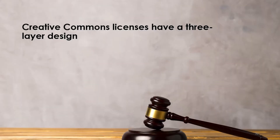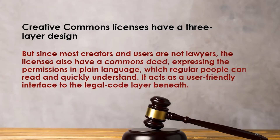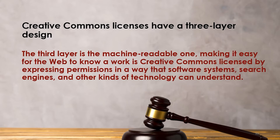The second layer is meant for the common person. It is called the common deed, which is written in plain, everyday language so that anyone who wants to read it can understand it. The third layer is machine language, which explains how machines — such as automated robots and web crawlers — can understand the content.